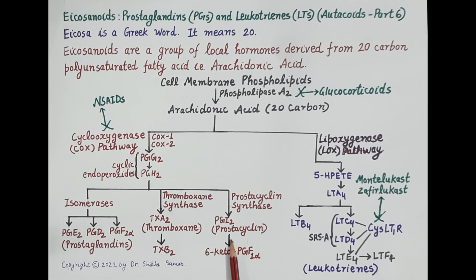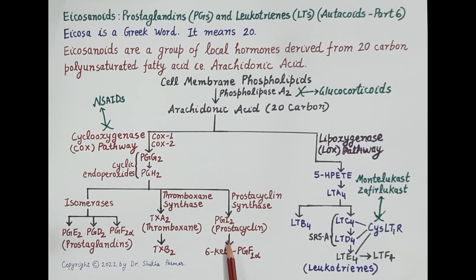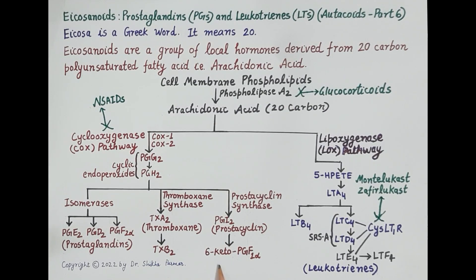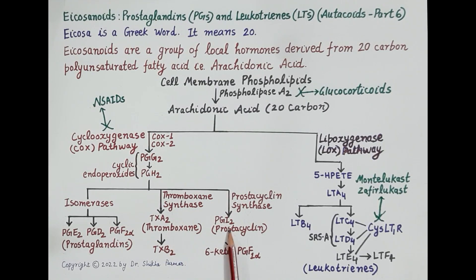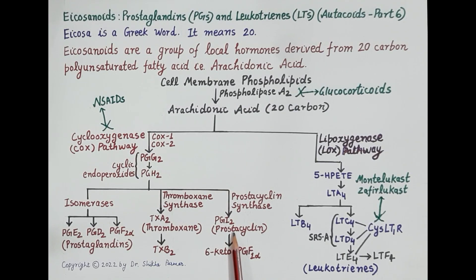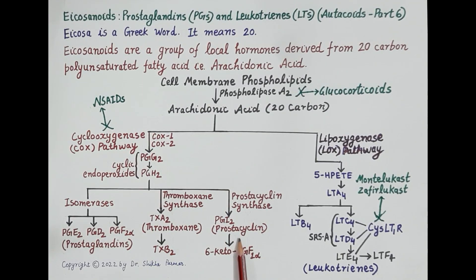Prostacyclin (PGI2) is mainly synthesized by the endothelium of blood vessels. It is also chemically unstable and rapidly converts to 6-keto prostaglandin F1α. Contrary to thromboxane A2, prostacyclin produces vasodilation and inhibits platelet aggregation.